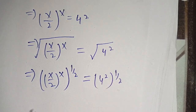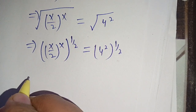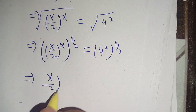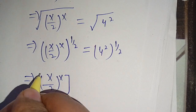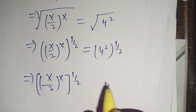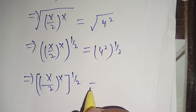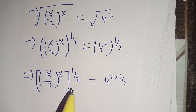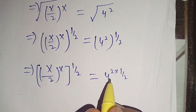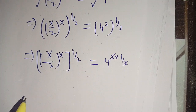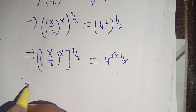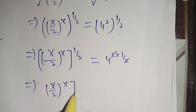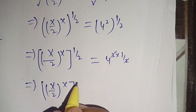We can write the left side as (x/2)^(x · 1/2), which equals 4^(2 · 1/2). We cancel the twos on the right side, leaving (x/2)^(x/2) = 4.